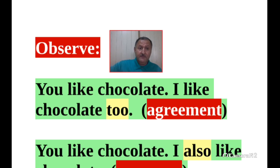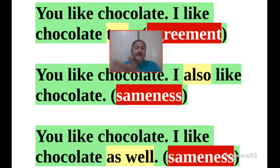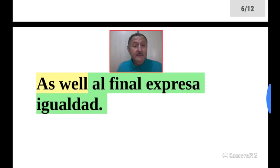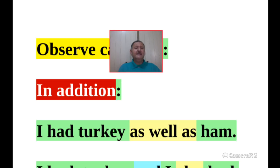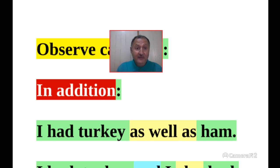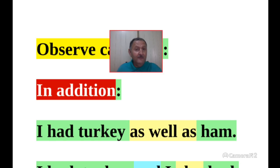Let's start with 'as well as'. Here, 'as well as' doesn't mean 'también' nor 'además', but rather 'así como' — though it's interpreted as 'además'. For example: I had turkey as well as ham. You ate turkey, as well as ham — and we interpret that as 'además', using 'as well as', not just 'as well'.